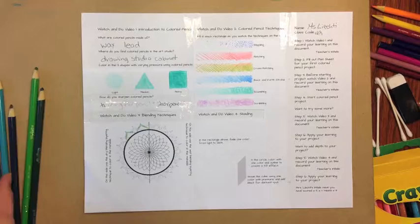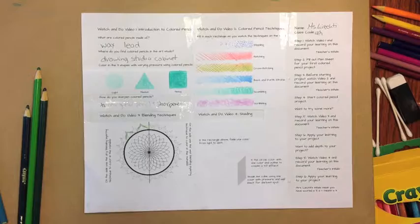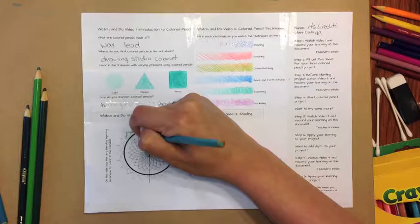Another thing you can do is use a colorless blender. It will bring the colors together without coloring over them. I'm going to color in this big space so you can kind of see that a little bit more.